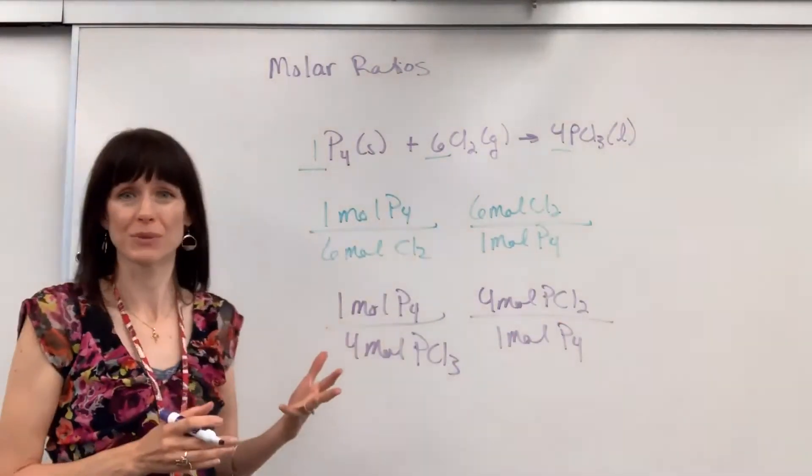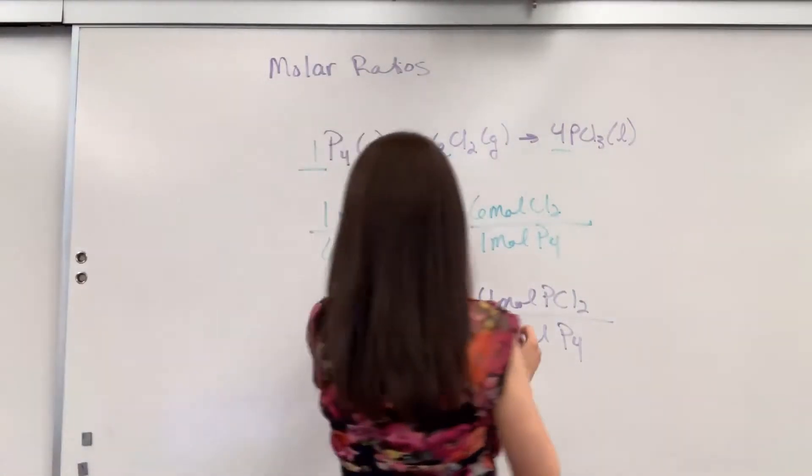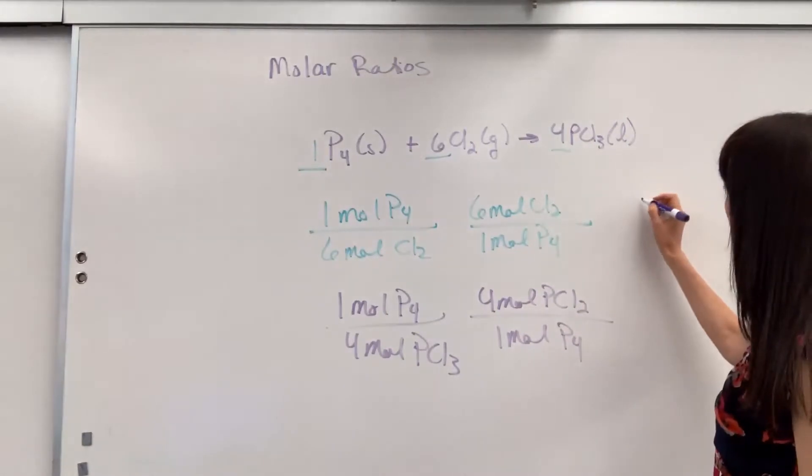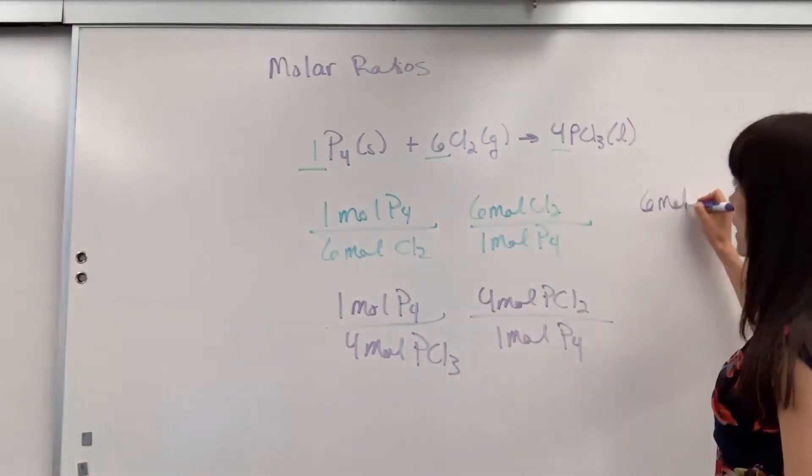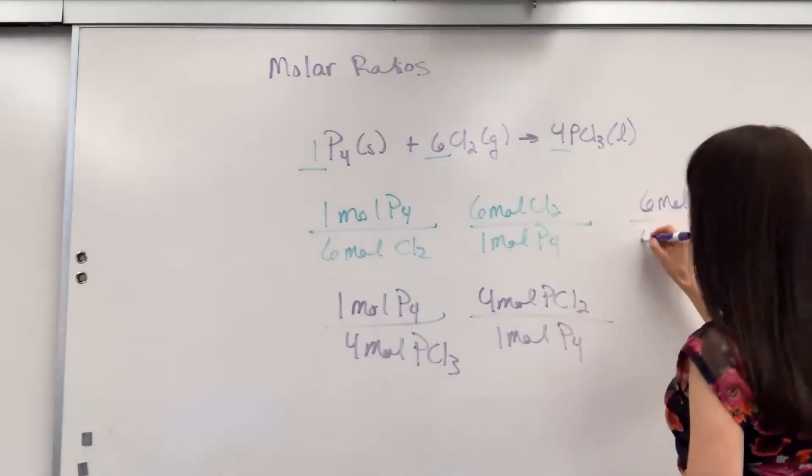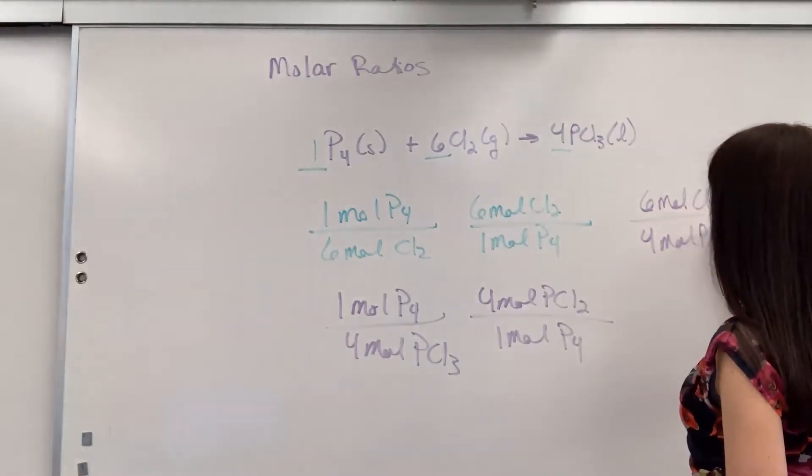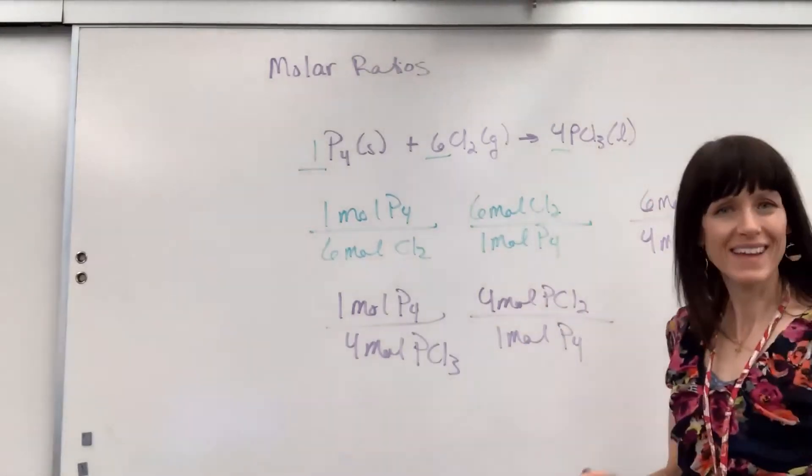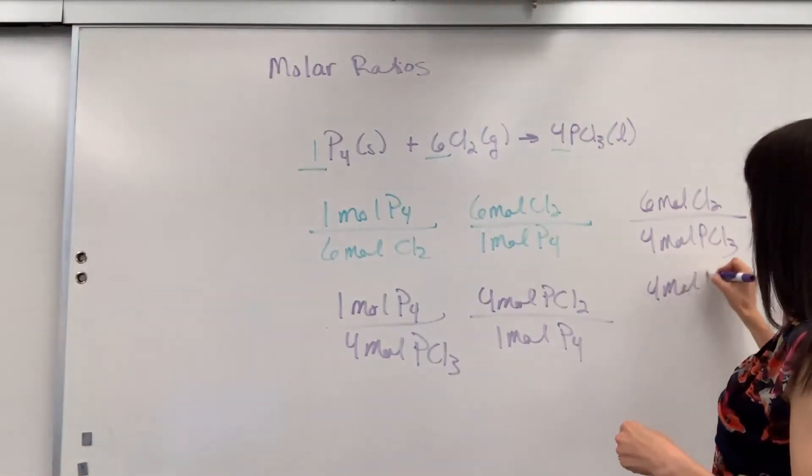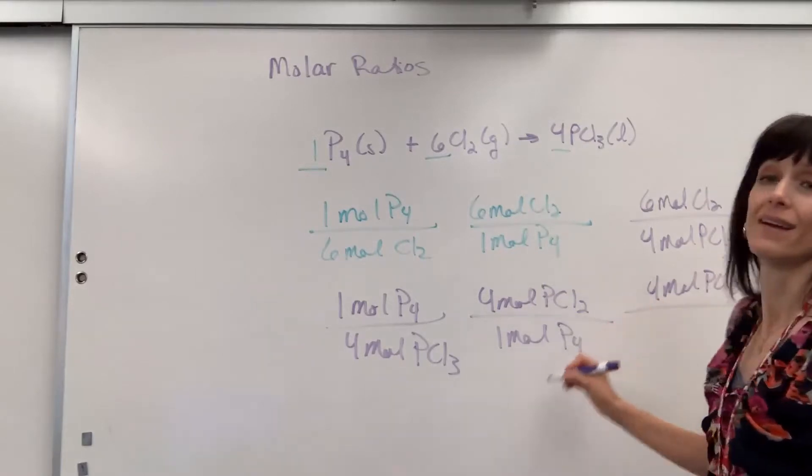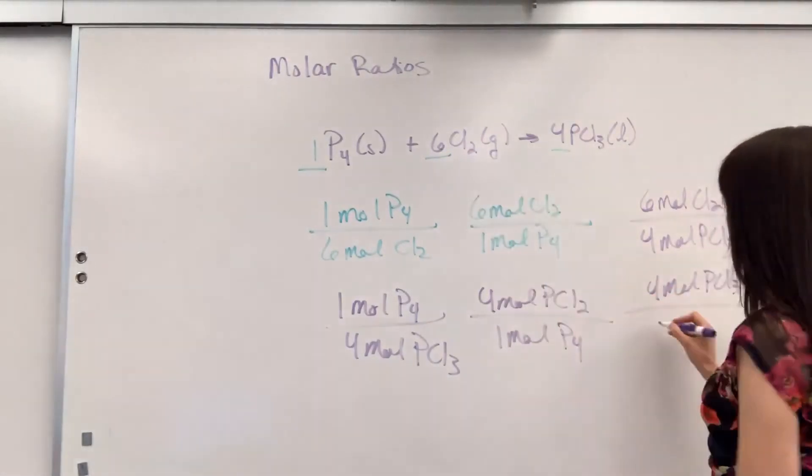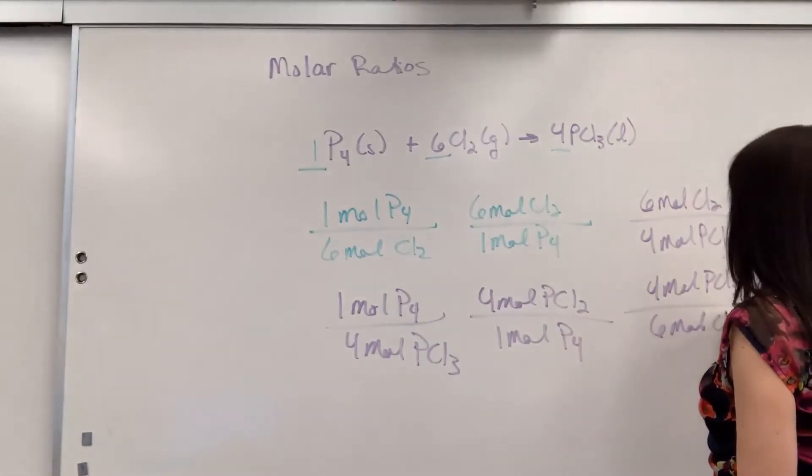Now the last possible ratio that we could have is comparing chlorine with the phosphorus trichloride. So if we have six moles of the chlorine it will produce four moles of that phosphorus trichloride. And then again, equally true. If we produce four moles of the phosphorus trichloride, how many moles of chlorine did we use? Right there, six. Six moles of chlorine.